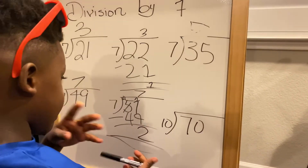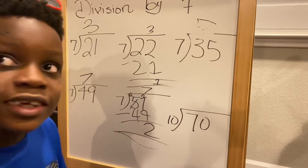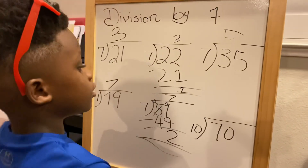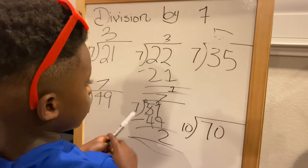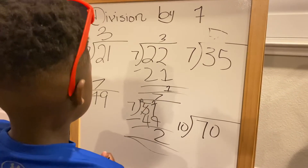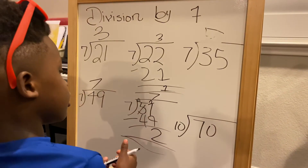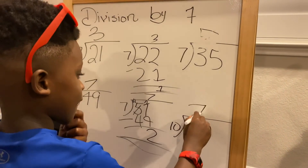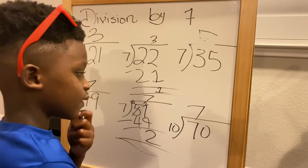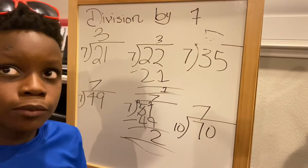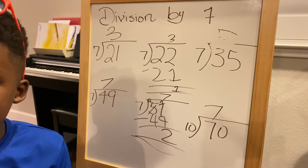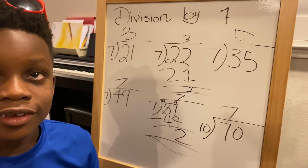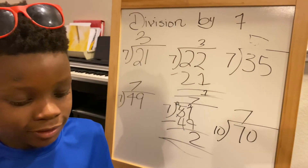Ten times seven — I mean, 70 divided by ten equals seven. That's like the most easiest question of all time. Seriously, it really is.